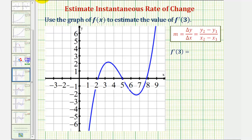So for the first step, we'll locate the point on the function when x equals three, which would be this point here. Next, we'll sketch the tangent line at this point, and then find the slope of that line.